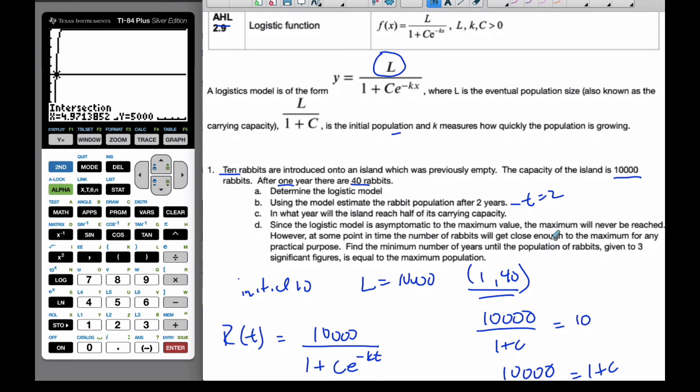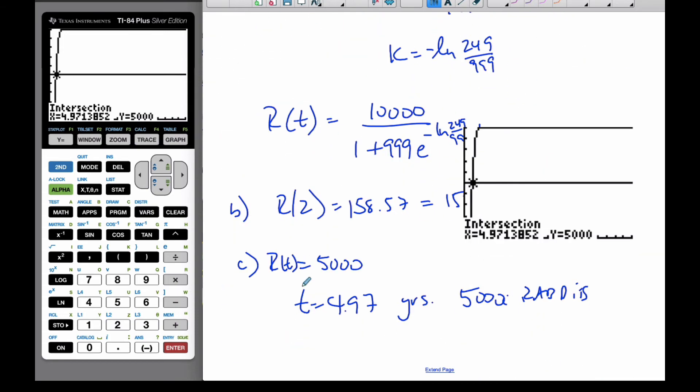Okay, now, D part says, Since the logistic model is asymptotic to the maximum value, the maximum will never be reached, which makes total sense. However, at some point in time, the number of rabbits will get close enough to the maximum for any practical purpose. Find the minimum number of years until the population of rabbits given to three significant figures is equal to the maximum population. And this is the key, three significant figures.